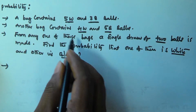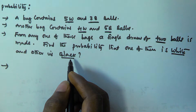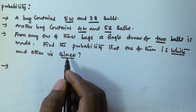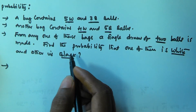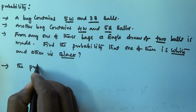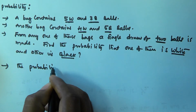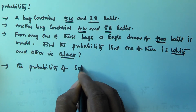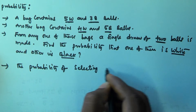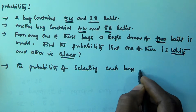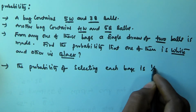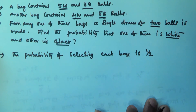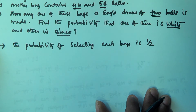So first of all, there are 2 bags. Out of these 2 bags, we have to select 1 bag first. The probability of selecting each bag is 1/2. Out of 2 bags, we have to select 1 bag, so the probability of selecting a bag is 1/2.